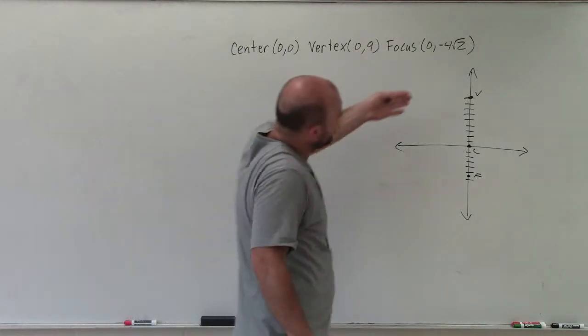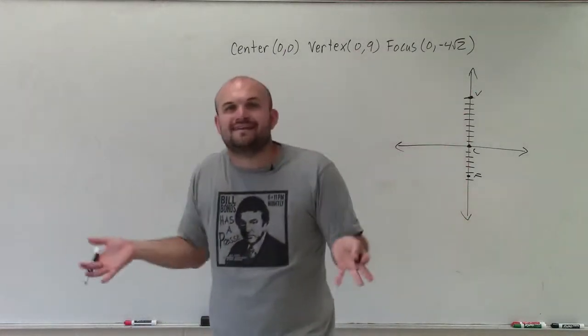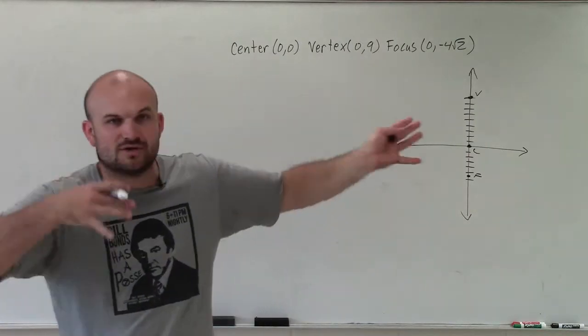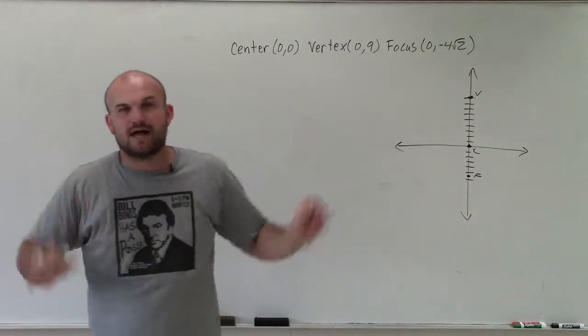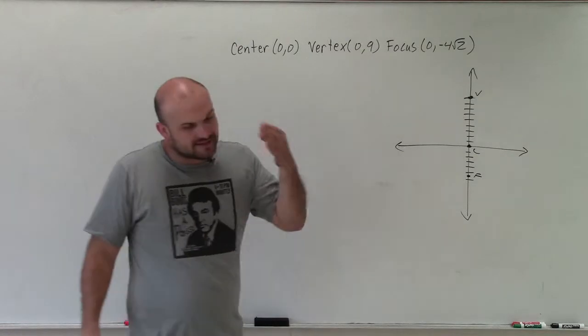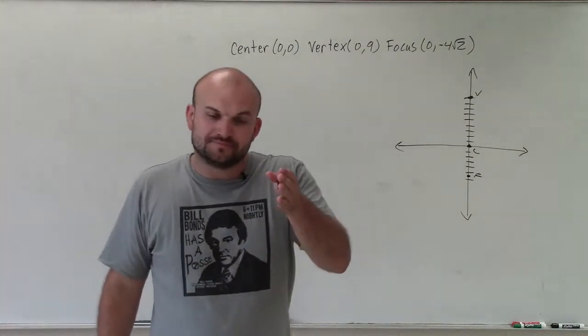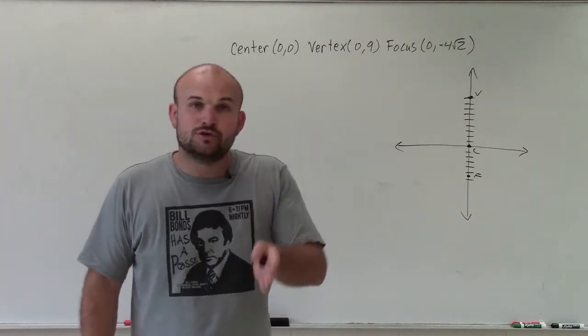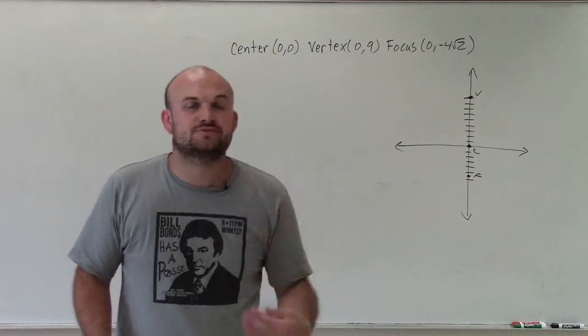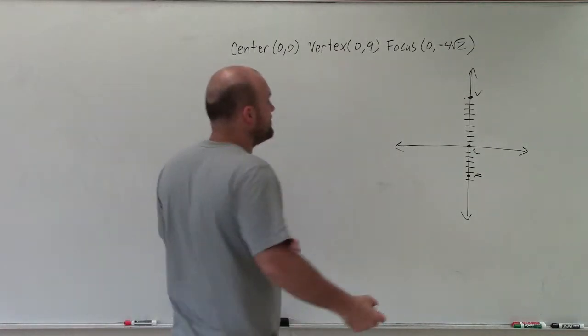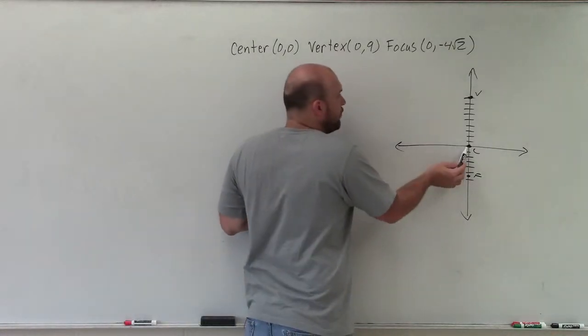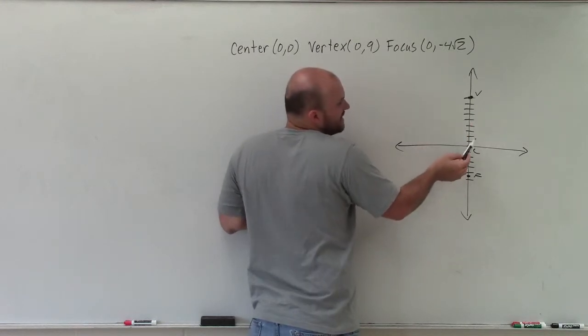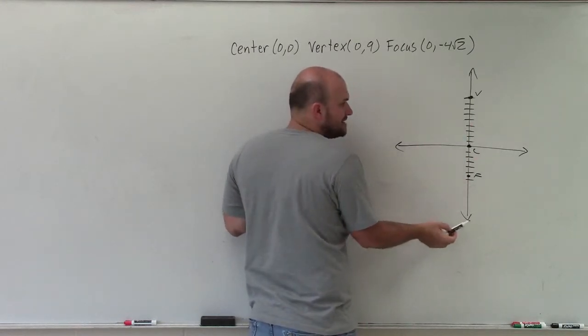But the main important thing I want you to see is, here's my vertex, here's my focus. How am I going to identify where the major axis is, horizontal, vertical, co-vertices? Well, remember that the major axis includes the vertices, the foci, as well as the center. And remember that the distance from one vertex to the center is in the same direction on the major axis.